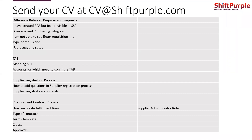The second question: if an interviewer asks that they created a blanket purchase agreement (BPA) but it is not visible in self-service procurement, they want to know whether you understand the concept of catalogs. A BPA is like a catalog in the system and should be reflected in the self-service procurement requisition page, where you search for items and the source agreement name should match the BPA you created.